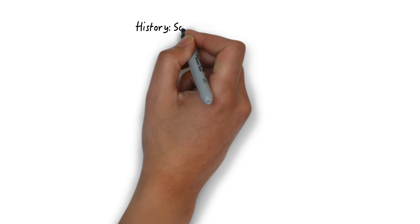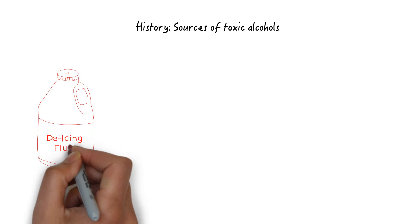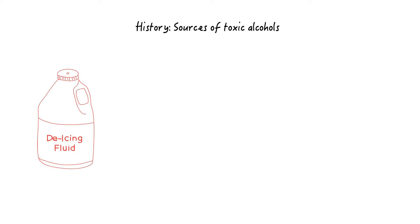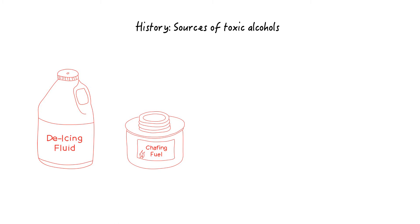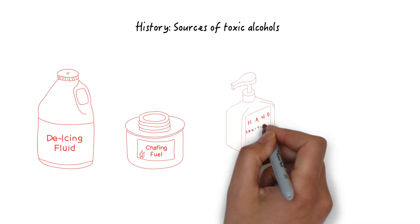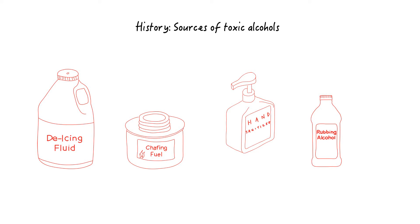Let's start by taking a patient history. Ask the patient's wife if there is anything in the home the patient may have consumed to become intoxicated. Things to ask about include sources of ethylene glycol such as antifreeze, brake fluids, and de-icing fluids; sources of methanol including windshield washer fluid, solid cooking fuel for camping and chafing dishes, and carburetor cleaning fluids; and sources of isopropyl alcohol such as hand sanitizer and rubbing alcohol. Patients with alcohol dependence may seek alternative sources if ethanol is not available.